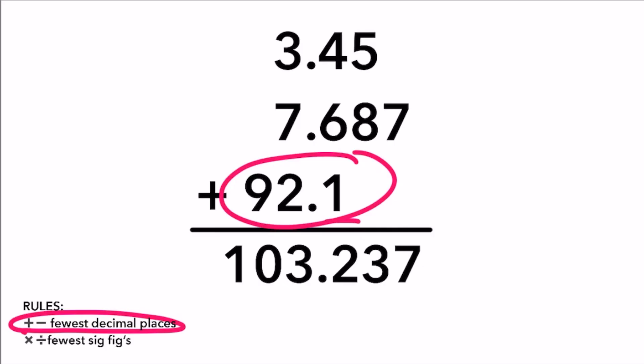We have to round 103.237 to one decimal place. Looking directly to the right of the 2, the 3 is less than 5, so that means the 2 stays the same. So our final rounded answer is 103.2.